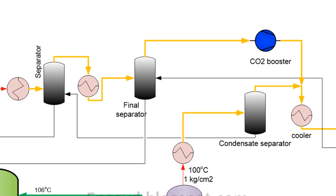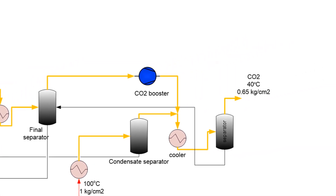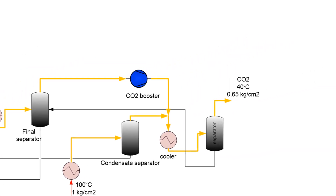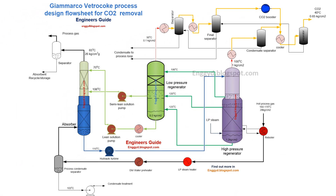The CO2-steam mixture from the regeneration towers is condensed and the heat is transferred to a demineralized water stream. The condensate is then recycled back to the process. The final cooling of the CO2 stream is performed using cooling water, and the CO2 is then compressed and sent to the urea or other production units.